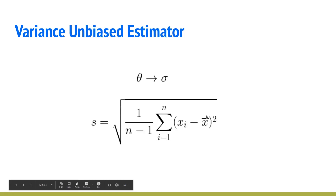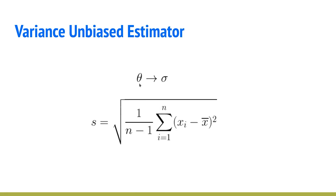It turns out that if θ is the variance, the unbiased estimator of the population variance is the square root of (1/(n−1)) times the sum of (xᵢ − x̄)². Let's now go to the proof of this formulation.